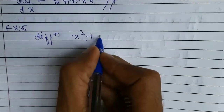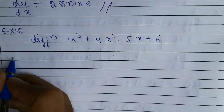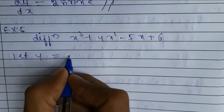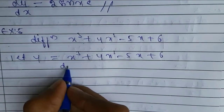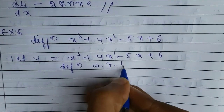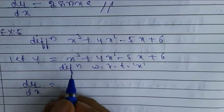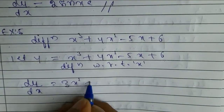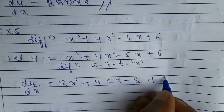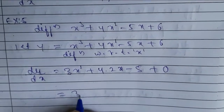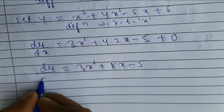Another question: differentiate x cube plus 4x square minus 5x plus 6. Let y equal to x cube plus 4x square minus 5x plus 6. Differentiating with respect to x, dy by dx — the differentiation of x cube is 3x square, plus 4 times the differentiation of x square is 2x, minus 5, plus 0, since the differentiation of any constant is 0. So the final answer is 3x square plus 8x minus 5.